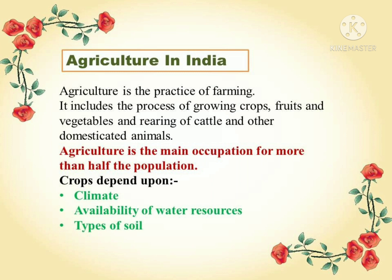Agriculture is the main occupation for more than half of the population of India. Crops are different in different parts of the country because they depend on factors like climate, availability of water resources, and types of soil. There are crops which require a particular type of climate to grow.